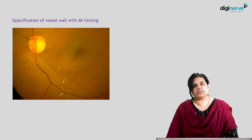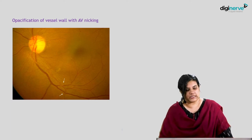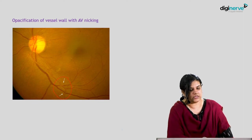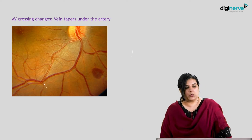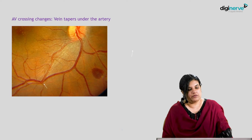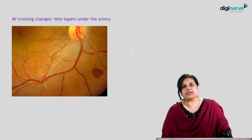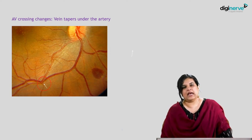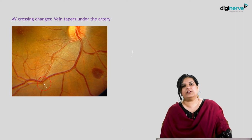Over a period of time, if changes are progressive, there will be opacification of the vessel wall associated with arteriovenous nicking. At the points indicated by white arrows, you can see arteriovenous nicking and a white opacified blood vessel. In another image, arteriovenous crossover changes show the vein tapering under the artery. It is always a good idea to draw a retinal diagram when documenting retinal vascular changes, because AV crossover changes at one point today may be followed by exudation or hemorrhages surrounding that area tomorrow.